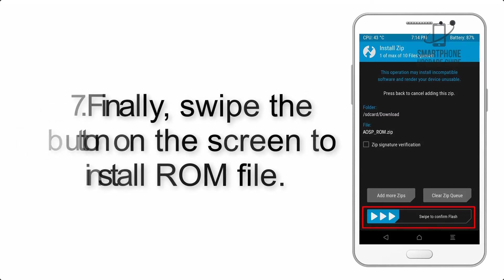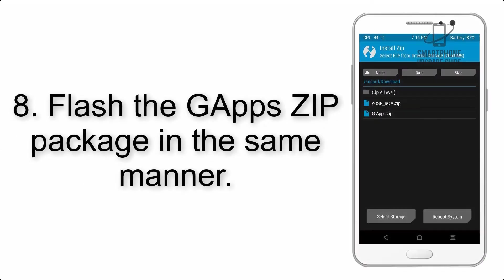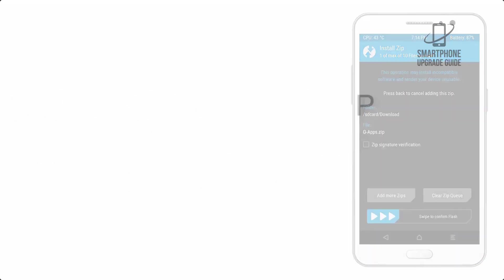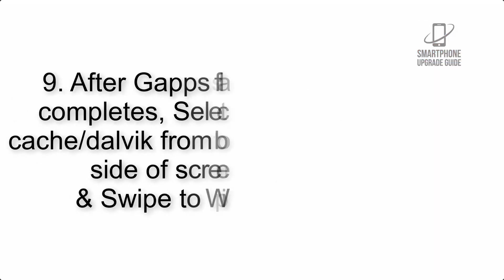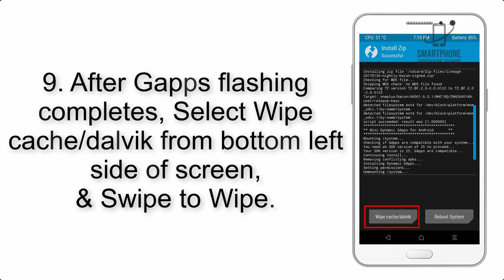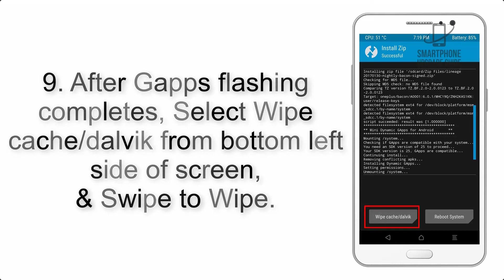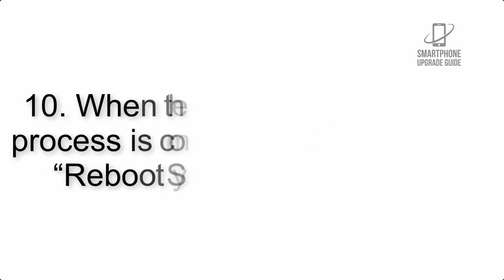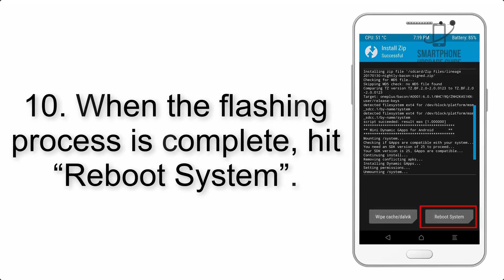Step 7: Swipe the button on the screen to install the ROM file. Step 8: Flash the GApps zip package in the same manner. Step 9: After GApps flashing completes, select Wipe Cache and Dalvik from the bottom left side of the screen and swipe to wipe.